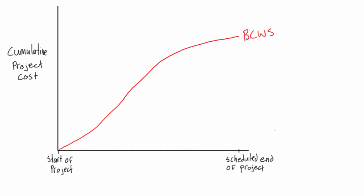BCWS is the budgeted cost of work scheduled. If we have a table of dependencies and make a Gantt chart off of it, and then have the stacked Gantt chart, we get this S-curve by adding up the daily costs of each activity. This is the budgeted cost of work scheduled because the Gantt chart is what we're expecting the project to be, but sometimes it doesn't always go as planned.